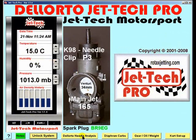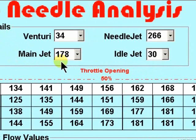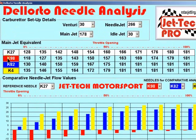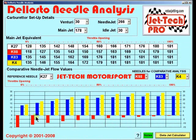Going to the Dell Auto needle analysis screen — this feature is used to determine the optimum needle from the hundreds of needles available from Dell Auto. You first enter the carburettor information in the top panel, and then below, for each needle selected you will find the equivalent main jet, and in the graphical representation below, whichever needle you select is compared with the reference needle.